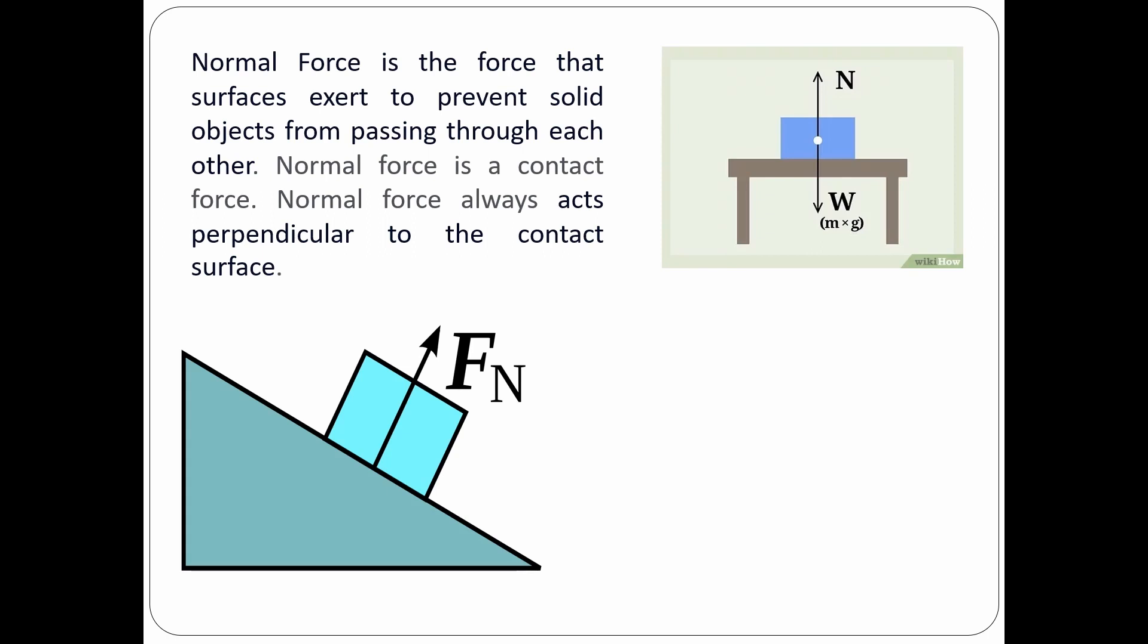Now how can we increase or decrease the normal force? One way to increase the normal force is by applying another downward force. The reason is that the surface has to exert an upward force to support the weight of the box and also the additional applied downward force.